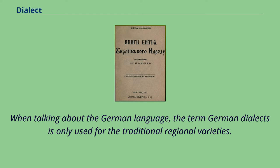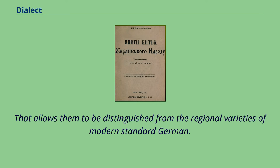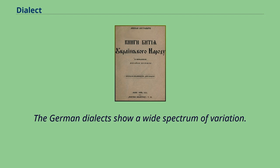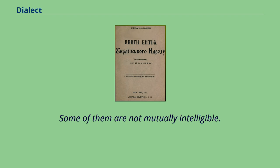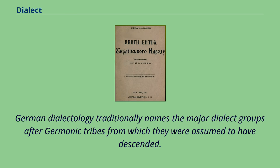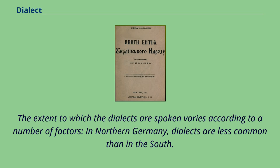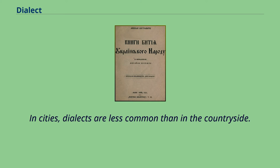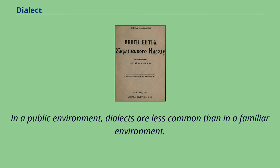When talking about the German language, the term German dialects is only used for the traditional regional varieties, allowing them to be distinguished from the regional varieties of modern standard German. The German dialects show a wide spectrum of variation, and some of them are not mutually intelligible. German dialectology traditionally names the major dialect groups after Germanic tribes from which they were assumed to have descended. The extent to which dialects are spoken varies: they are less common in northern Germany than in the south, less common in cities than in the countryside, and less common in public than in familiar environments.